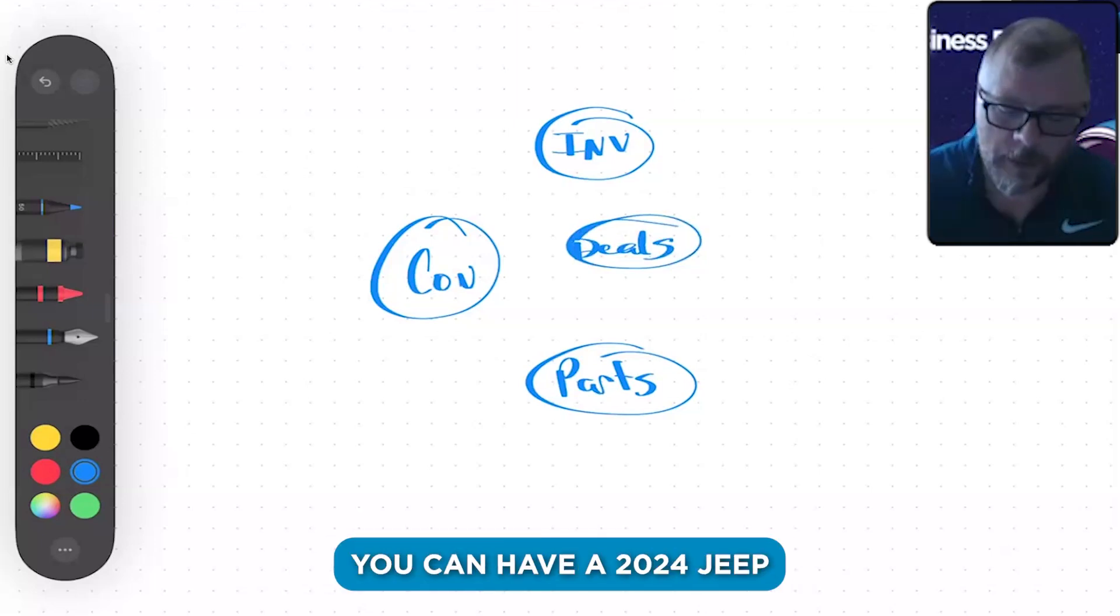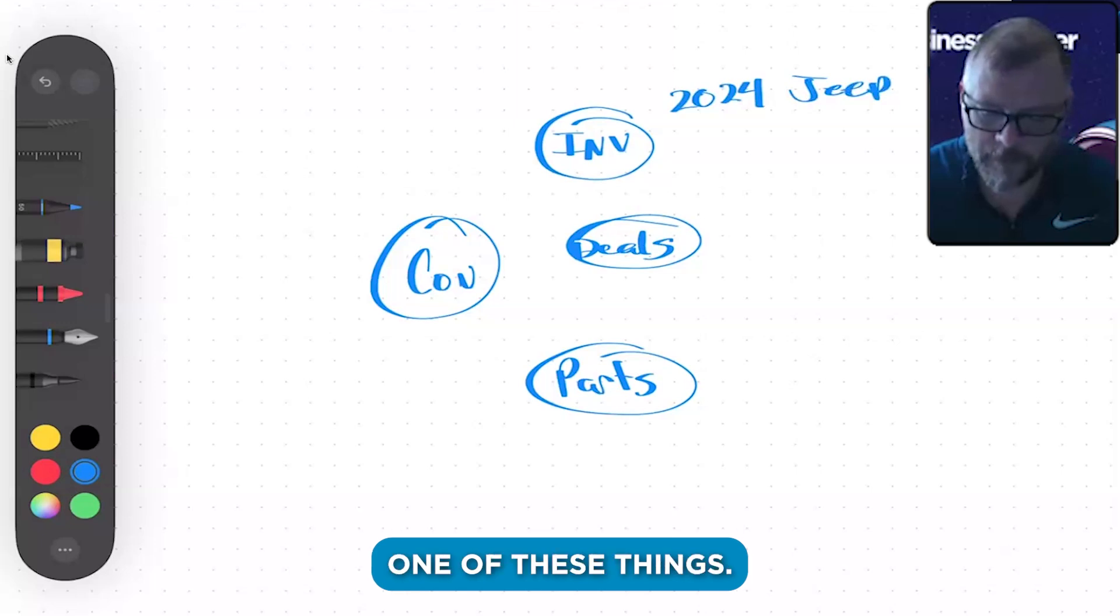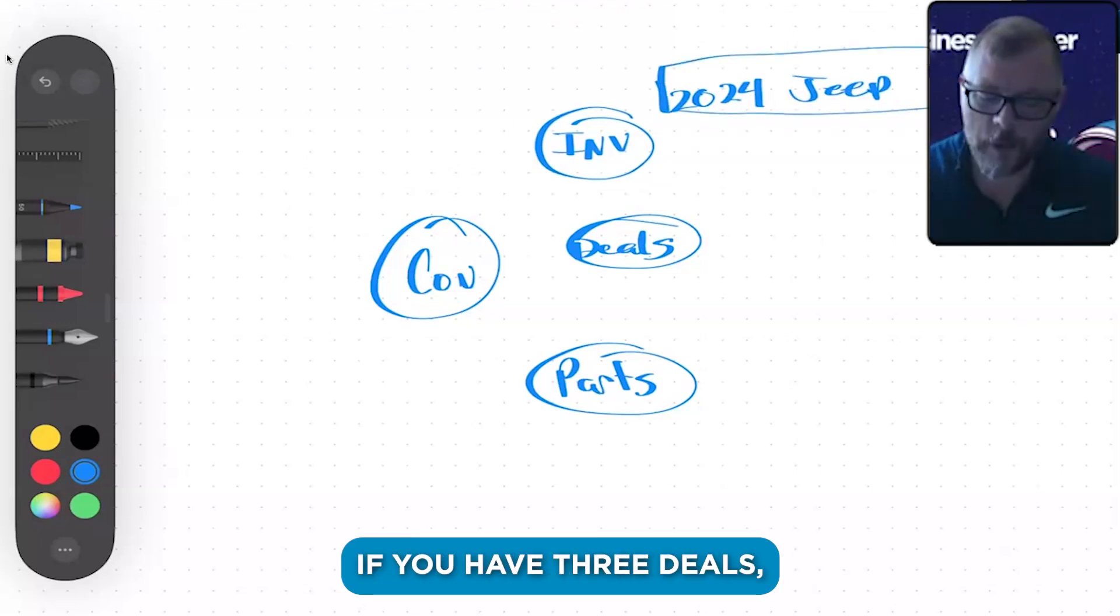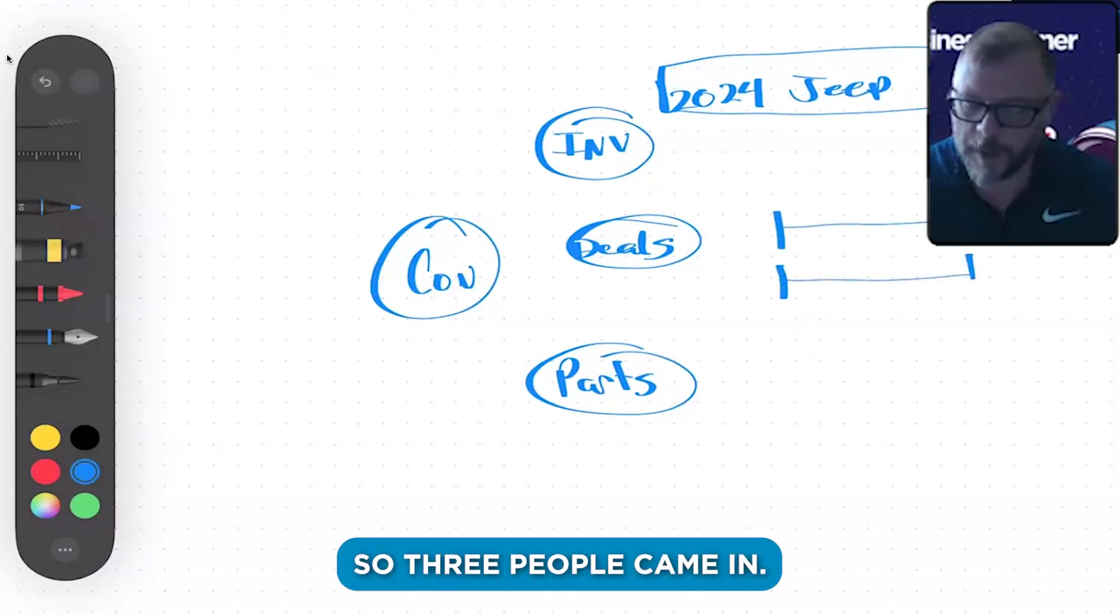For example, a deal: you could have inventory of cars, you could have a 2024 Jeep in blue and you only have one of these things. So there's only one of those objects.